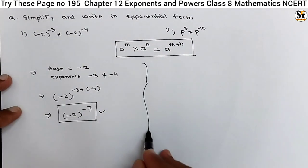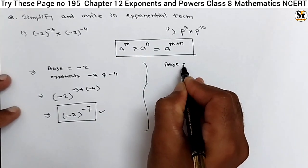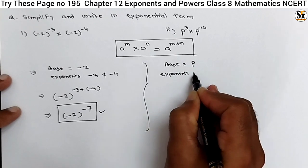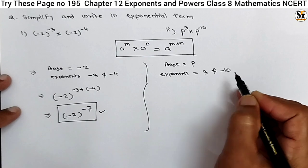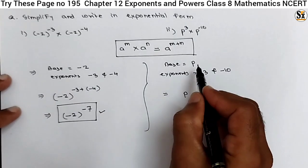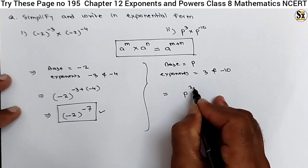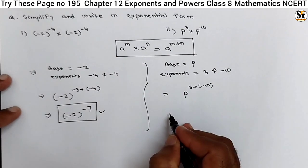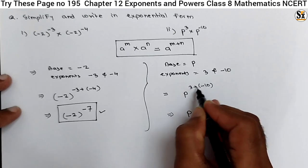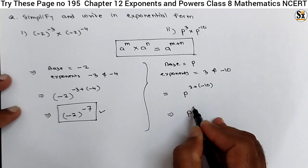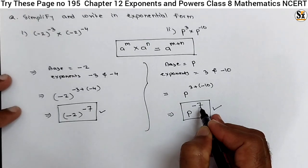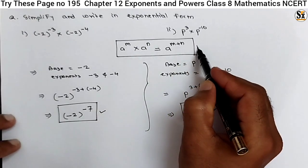Now see the second example. Here the base is P, which is common for both terms. The exponents are 3 and minus 10. So we write the base P, then add the exponents: 3 plus minus 10. We subtract 3 from 10 and write the negative sign, giving 10 minus 3 equals 7, so the sign is minus 7. Therefore, P raised to power minus 7 is our answer, where P is the base and minus 7 is the exponent.